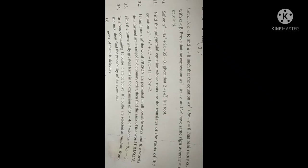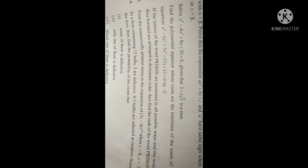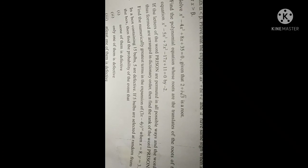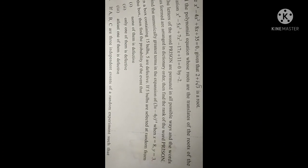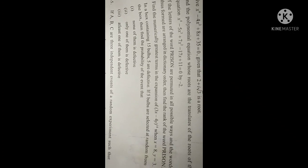Question 31: Find the polynomial equation whose roots are the translates of the roots of x⁴ - 5x³ + 7x² - 7x + 11 = 0 by -2. Question 32: If the letters of the word PRISON are permuted in all possible ways and the words thus formed are arranged in dictionary order, then find the rank of the word PRISON.